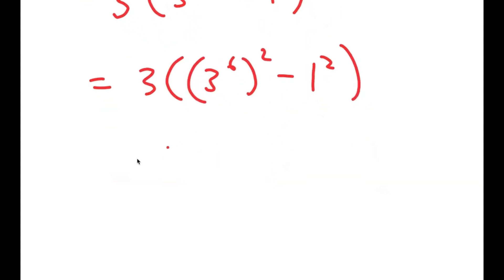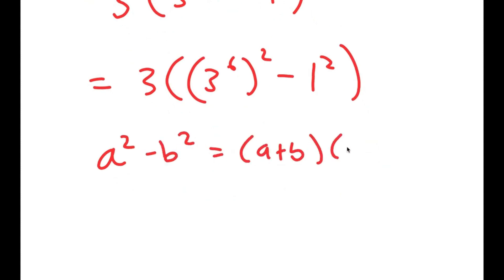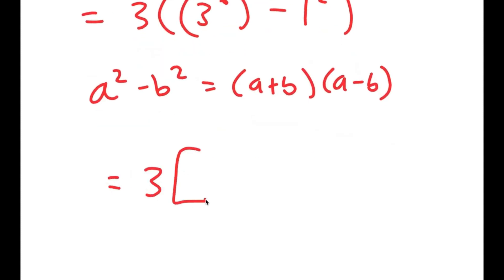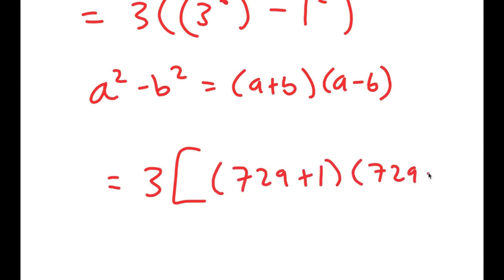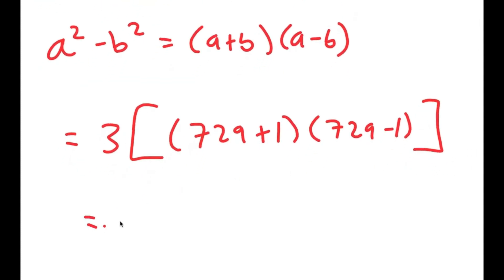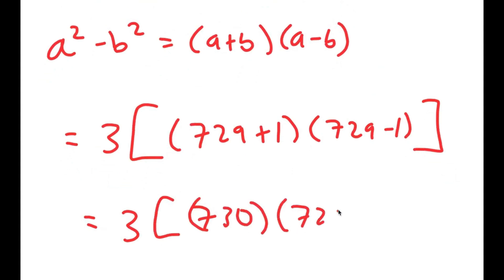I'm writing this like this because now I can use the property a squared minus b squared is equal to a plus b times a minus b. So this turns into 3 times 729 plus 1 times 729 minus 1, which is equal to 730 times 728.